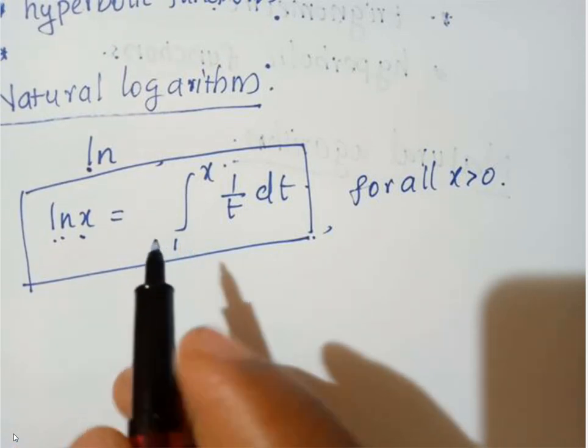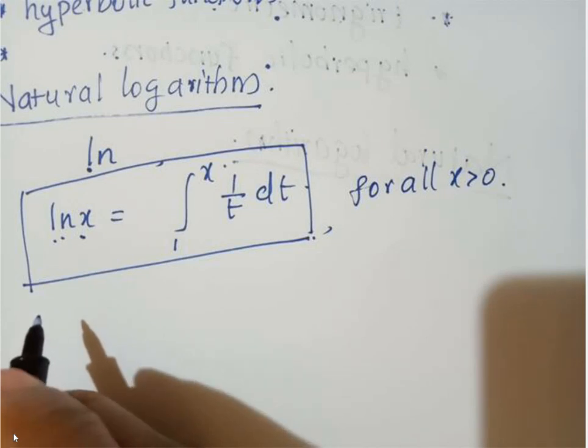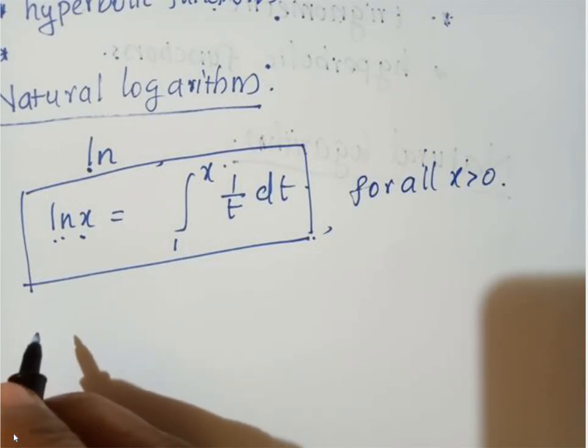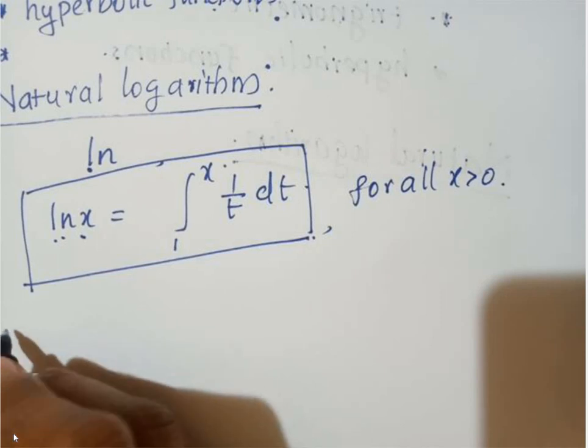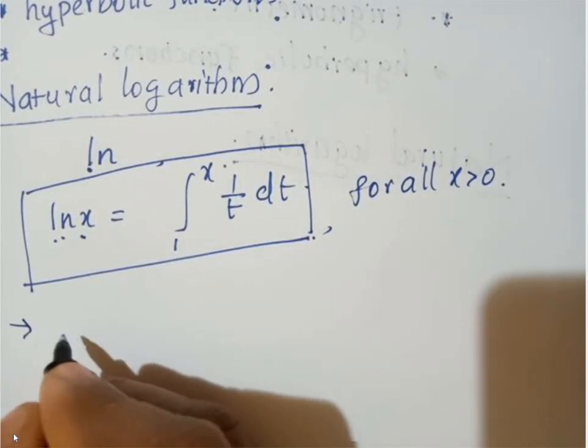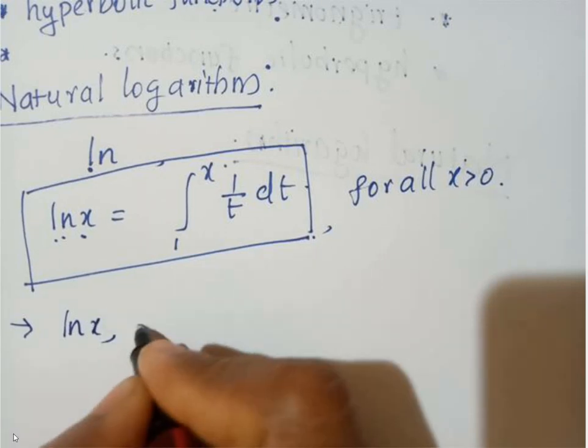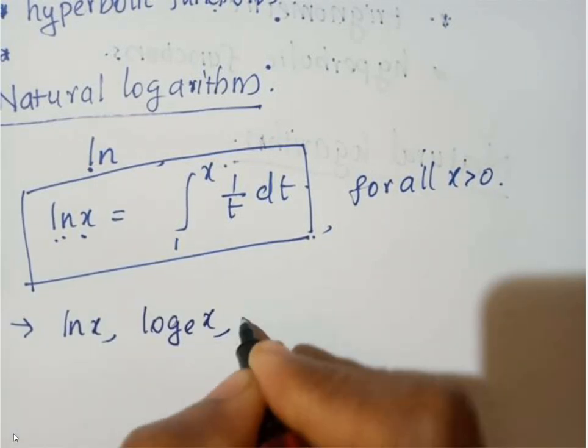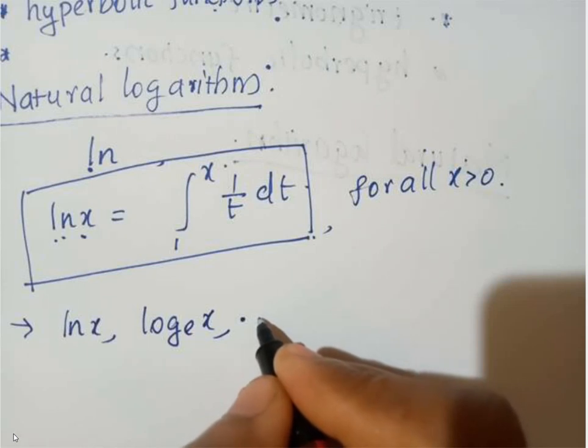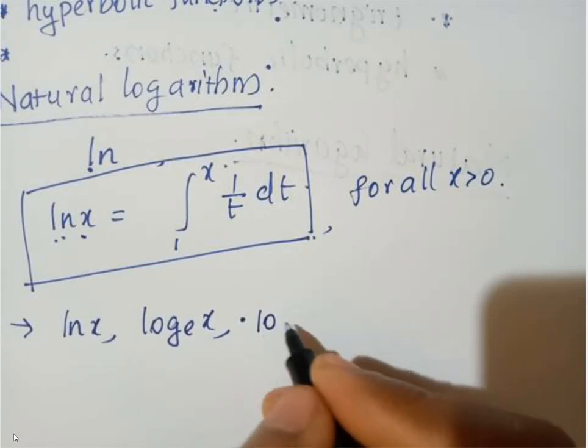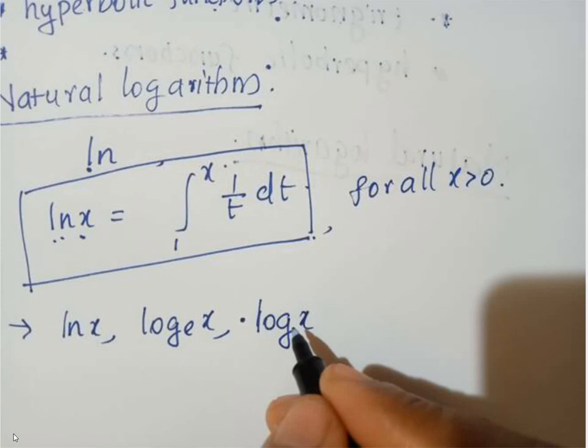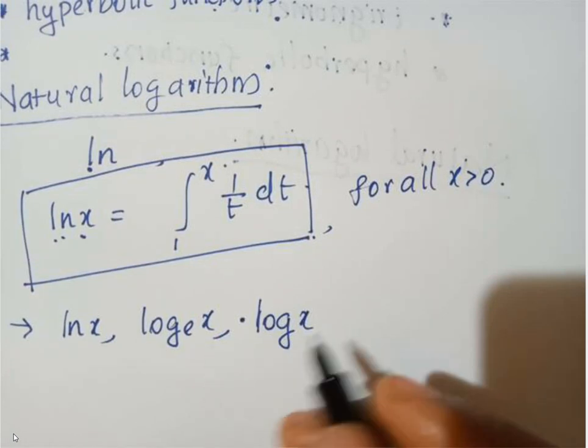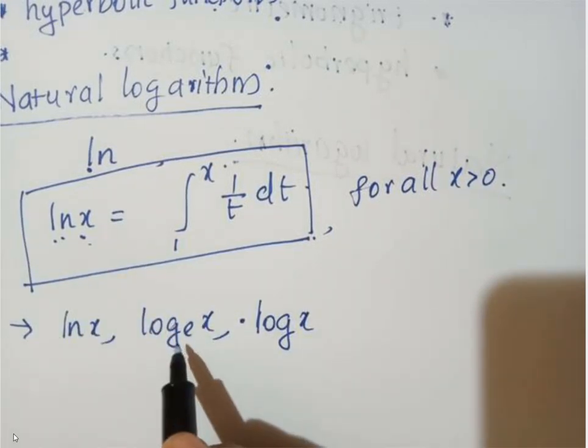Actually, natural logarithm can also be defined as ln x, logarithm to the base e. This is the logarithm to the base e, and it is often denoted as ln x, log e to the base x, or log base e. These are the common notations of this natural logarithm.